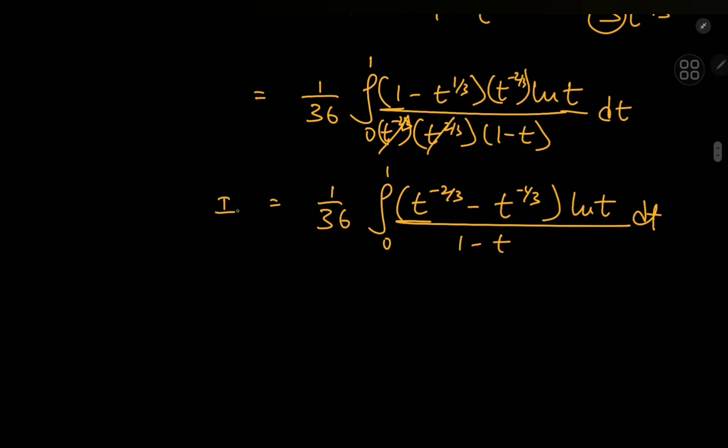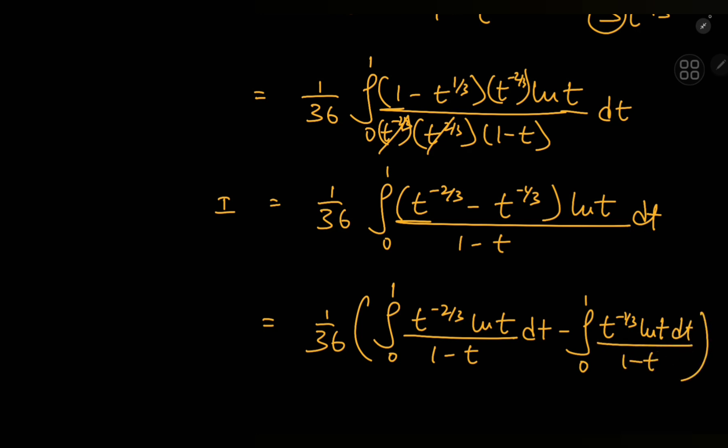And now I'm going to invoke the linearity of the integration operator and write this as the sum of a couple of integrals. The first one is the integral from 0 to 1 of t to the negative 2 thirds times log t divided by 1 minus t dt minus the integral from 0 to 1 t to the negative 1 thirds log t dt divided by 1 minus t.